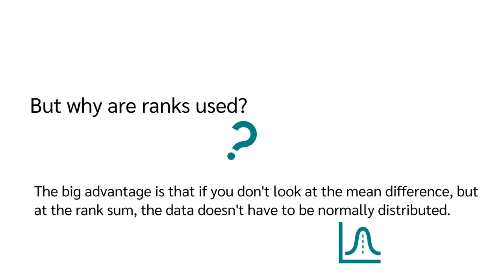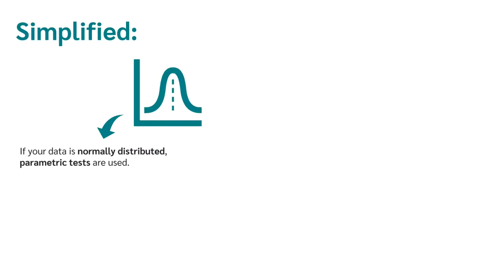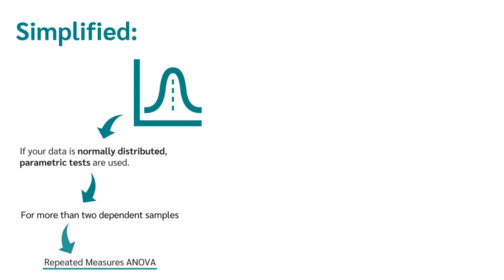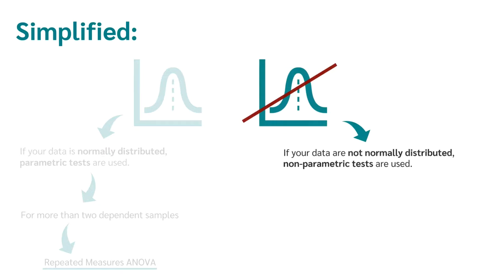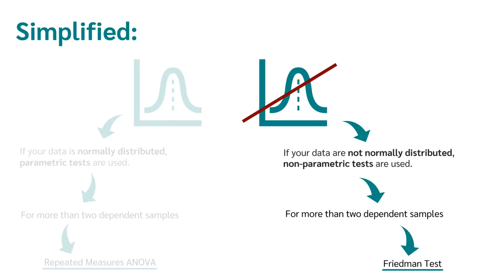But why are rank sums used? The big advantage is that if you look at rank sums rather than mean differences, the data doesn't have to be normally distributed. Simply put: if your data are normally distributed, parametric tests are used — for more than two dependent samples, that is the analysis of variance with repeated measures. If your data are not normally distributed, non-parametric tests are used — for more than two dependent samples, that is the Friedman test.